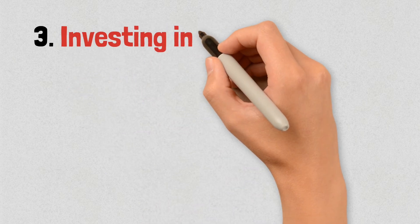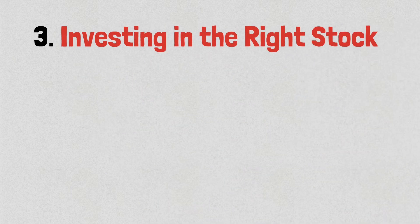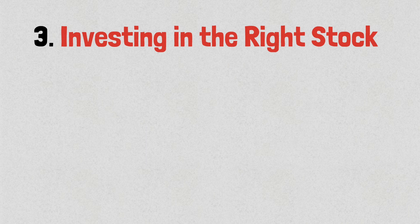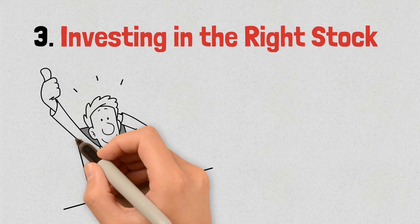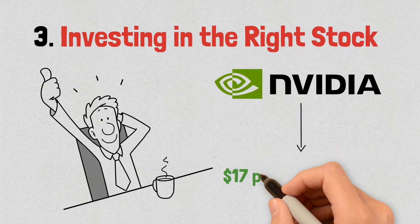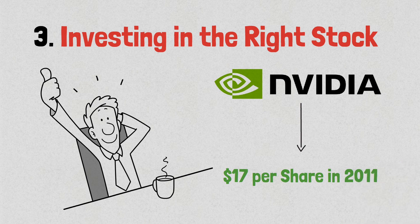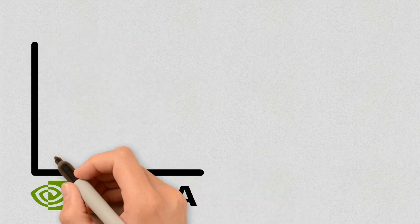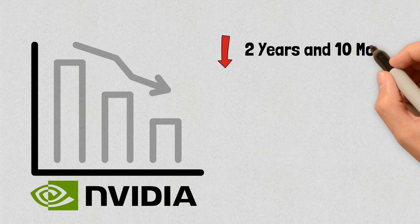The third most common way people became millionaires was by investing in the right stock at the right time. One of the answers by a person said they bought Nvidia stock at $17 a share in 2011. After that, the stock traded in a lost position for 2 years and 10 months.